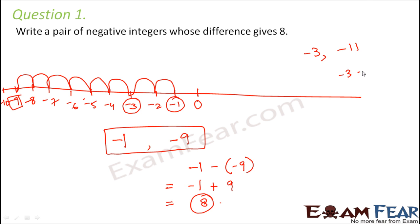So when you subtract these two, minus 3 minus minus 11, you get it as minus 3 plus 11, which is equal to 8.